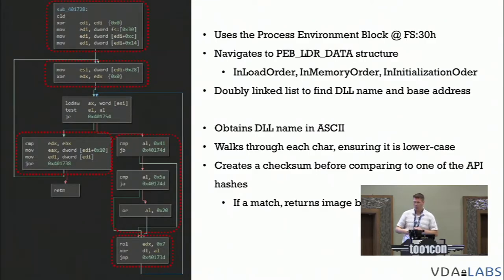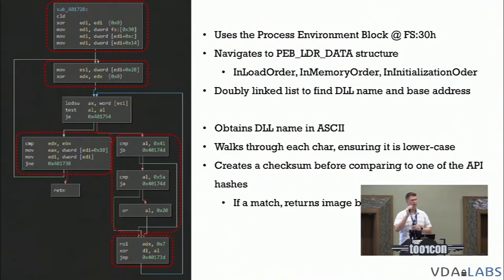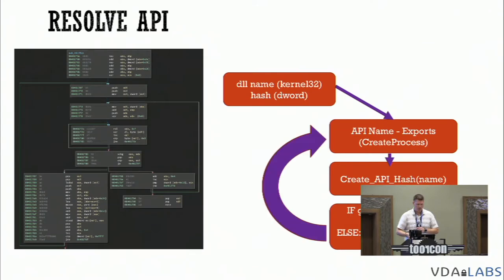For reference, here's the overall flow: it uses the PEB — the Process Environment Block — recognizable by 'FS:[30h]' at the very top, using the FS register to navigate somewhat undocumented structures in the process to get a doubly linked list of all DLLs in memory. Once it determines a match it gets the base of that DLL and parses the PE file. The next function finds the export table, calculates hashes of export names, compares them to hard-coded hashes, and if a match is found, gets that function address and builds an array of function pointers.